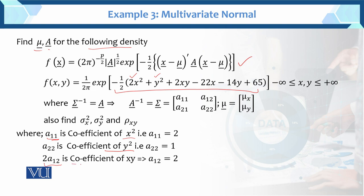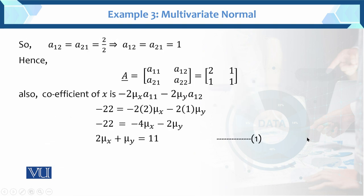Now a12 is the coefficient of xy. The coefficient of xy is equal to 2, so 2·a12 = 2, which gives a12 equal to a21, and dividing by 2 we get a12 = a21 = 1.